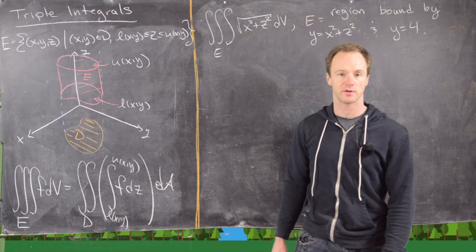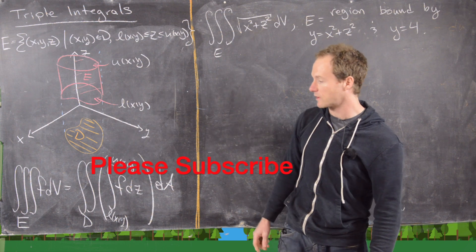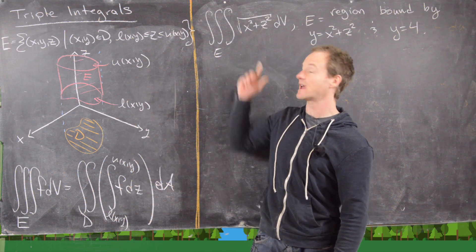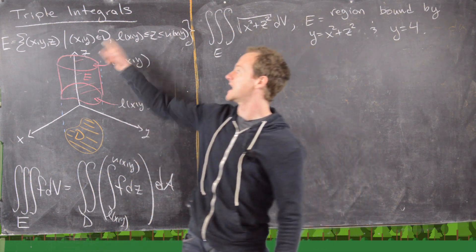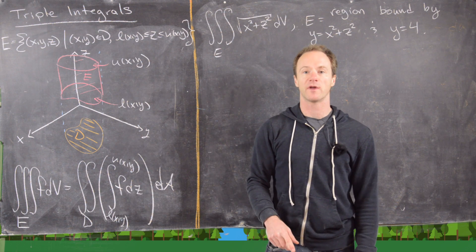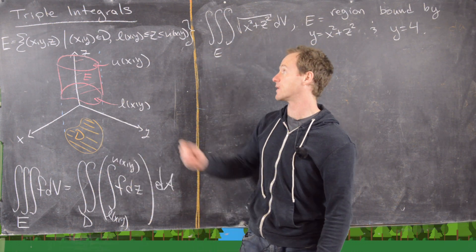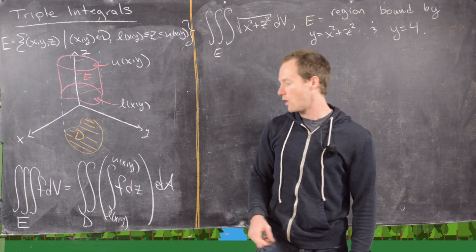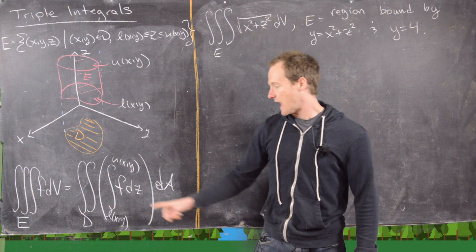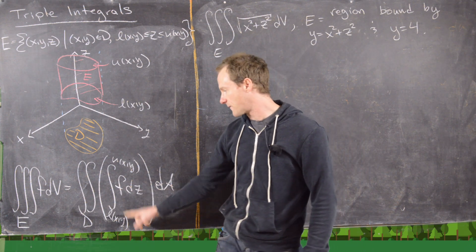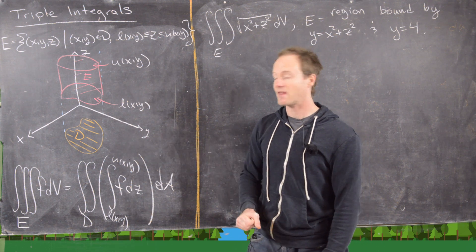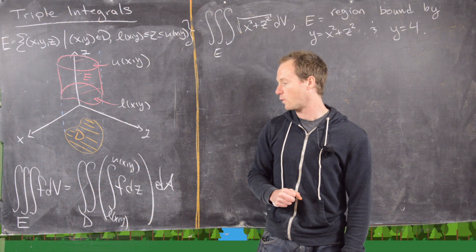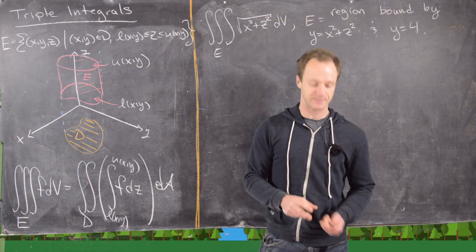Here we're going to look at another example of a triple integral. A triple integral can be written as an iterated double and single integral. If E is the region above the XY plane where X and Y values are bound by a region D in the XY plane, and Z is bound by a lower and upper function, we decompose the triple integral over E as a double integral over D with a single integral with respect to Z inside. Not all of the time will your two-dimensional region be in the XY plane — sometimes it might be in the XZ or YZ plane, which means your inner integral may not always be with respect to Z.